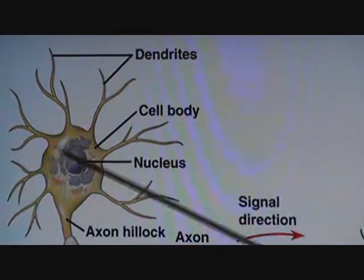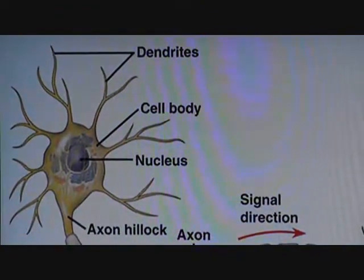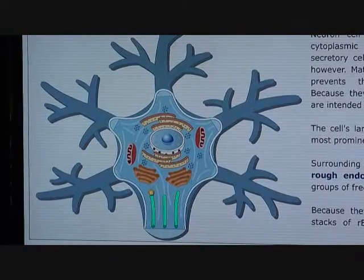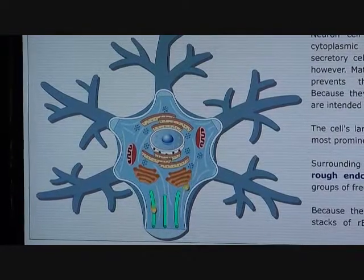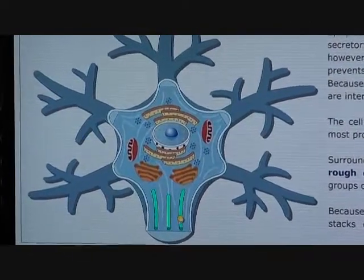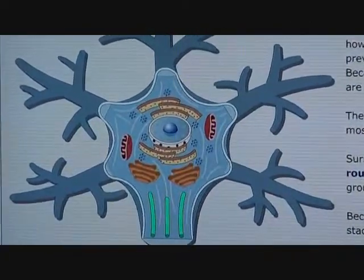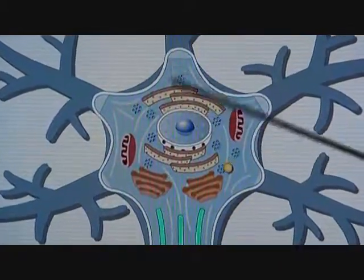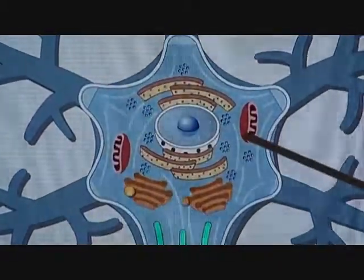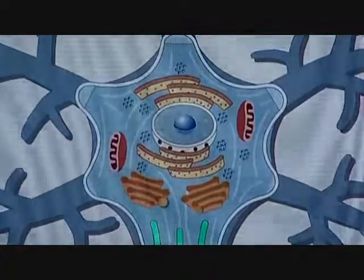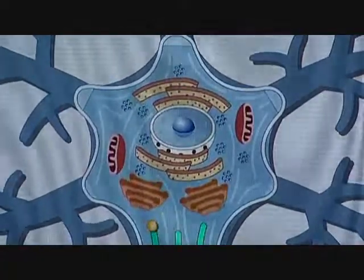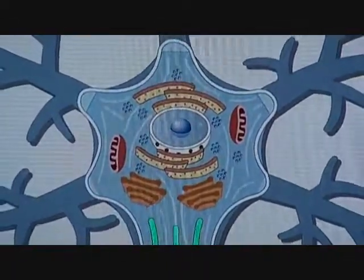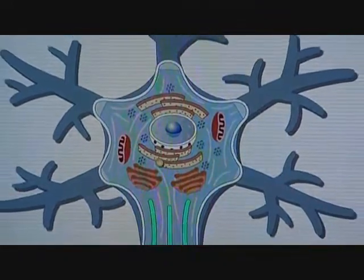This is the cell body. The cell body contains all the organelles a normal cell would have. For example, this is the nucleus, the rough ER, the mitochondria, and the Golgi apparatus. The only organelle a neuron would not contain would be the centrioles.